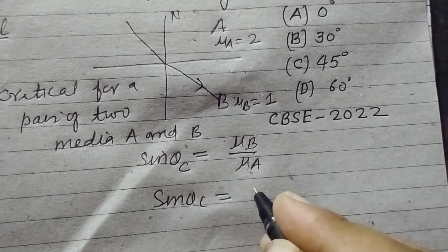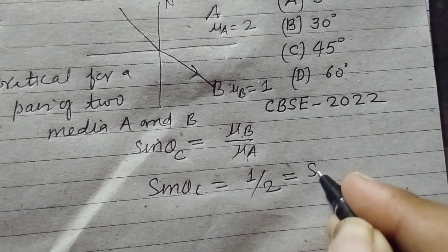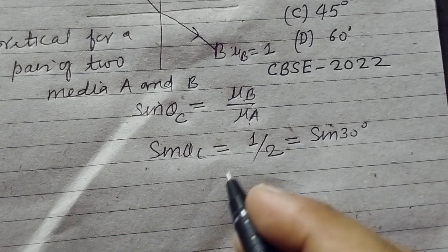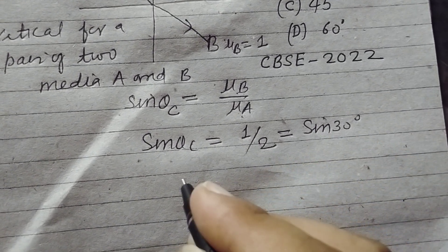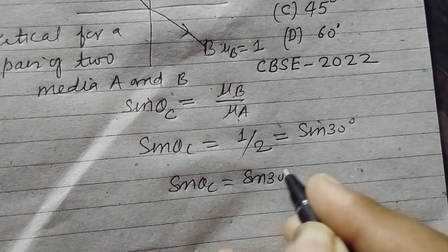So sine theta C equals 1 over 2, and this is the value of sine 30 degrees. Therefore, sine theta C equals sine 30.